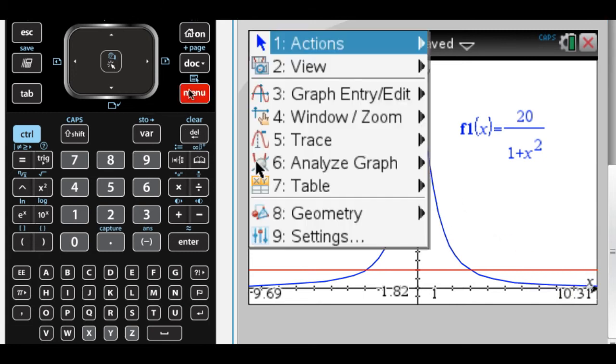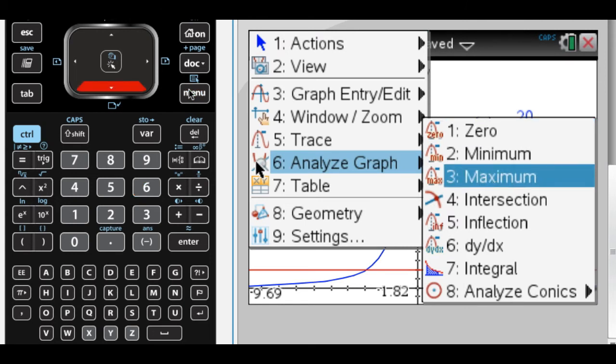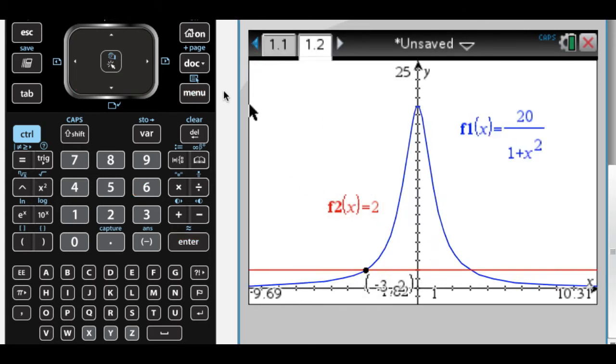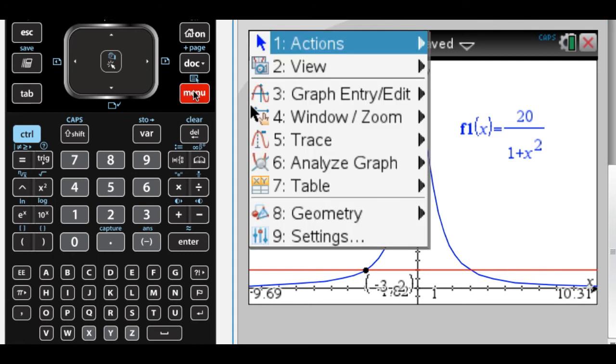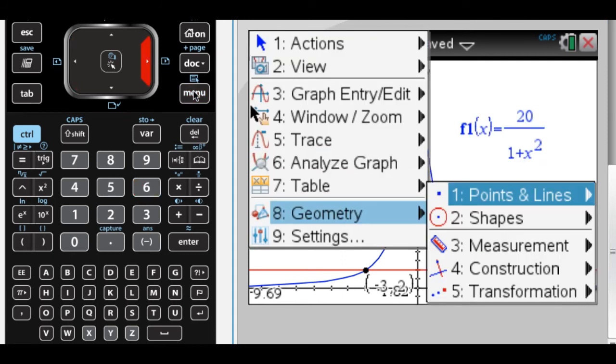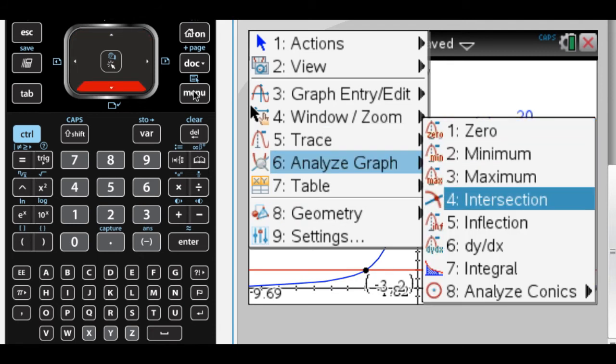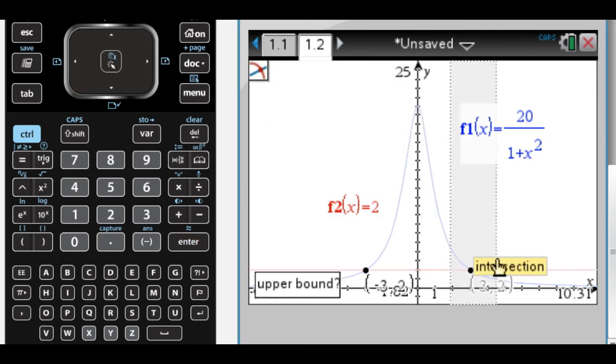I need to find where they intersect, so let me do that. I like to use the intersection tool instead of the alternative, which is to use in geometry there's intersection points. That just gets all of them at the same time, and there's nothing wrong with that. It's actually faster. I guess it's just personal preference.